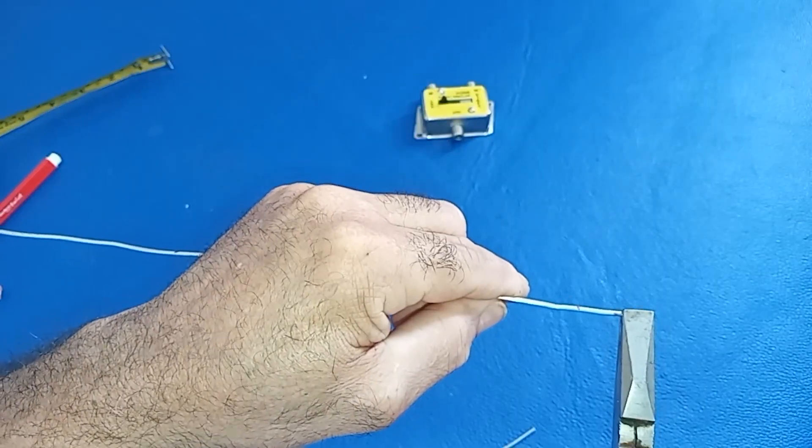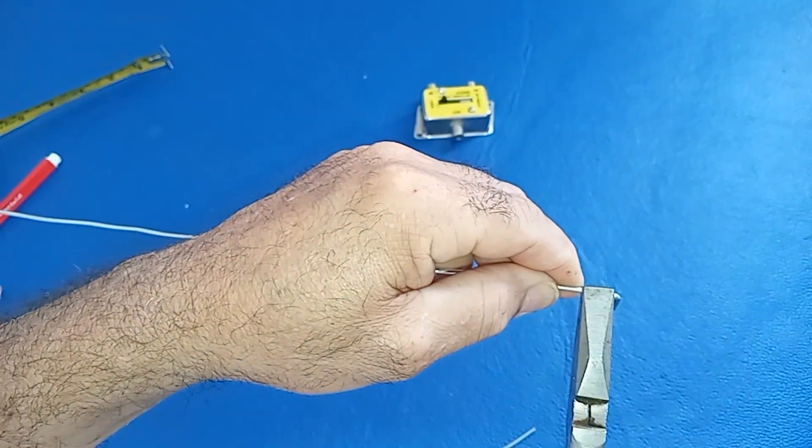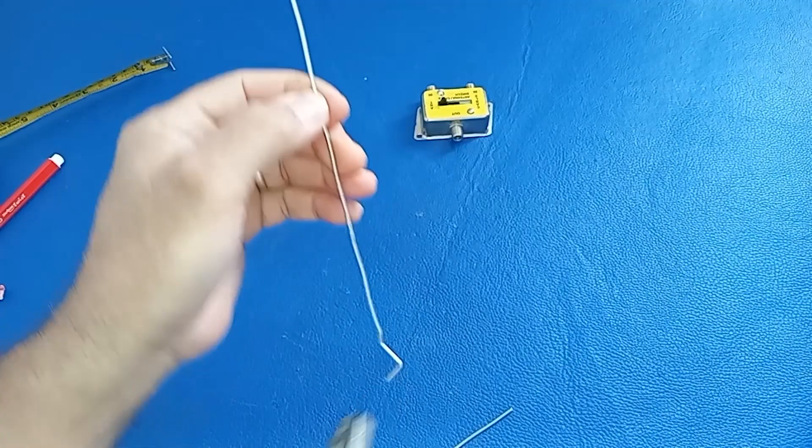Step two, bending the cable. At the first mark, one centimeter, bend the cable at a 90 degree angle. For the second mark, 1.5 centimeters, bend the cable at a 135 degree angle.